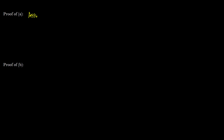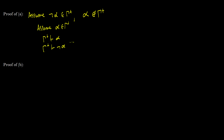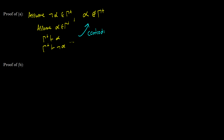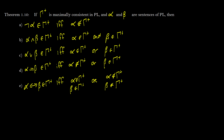Proof of A. We're going to assume that not alpha is a member of gamma plus. This is the same thing as saying that alpha is not a member of gamma plus, because if we assume that alpha was a member of gamma plus, then we have that gamma plus can prove alpha and gamma plus can prove not alpha — therefore we get a contradiction. So we know that alpha cannot be a member of gamma plus. Some books have it a little differently, but this is sufficient.